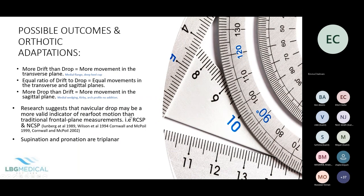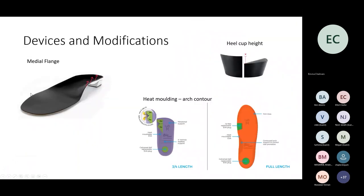Research suggests navicular drop may be a more valid indicator of rearfoot motion than traditional frontal plane measurements such as resting calcaneal stance position and neutral calcaneal stance position. Since supination and pronation are triplanar, assessing more planes gives a better overall picture. A medial flange is simply an increase of material around the medial portion of the orthotic; you can also increase heel cup height, and for off-the-shelf orthotics the heat-moldable BioAdvanced, BiomEx, and BioUnified allow you to contour to the patient's arch.